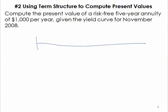On a cash flow diagram, our cash flows of this annuity are just one thousand dollars repeated five years in a row.